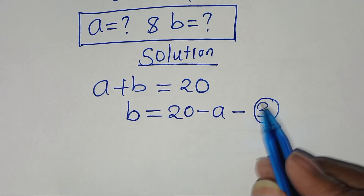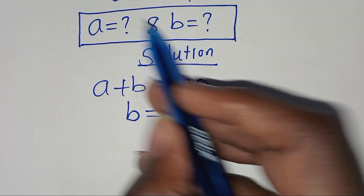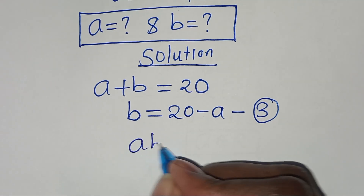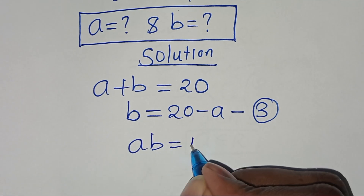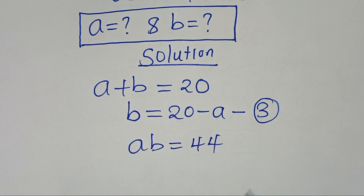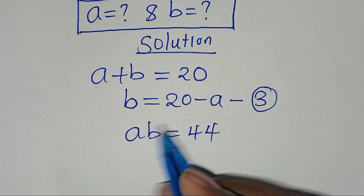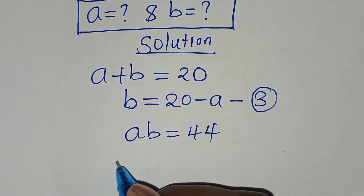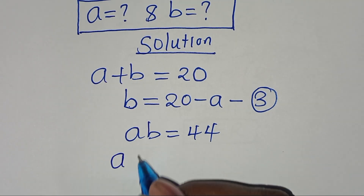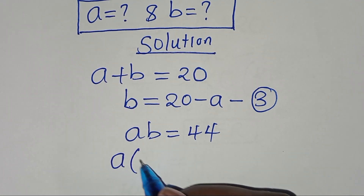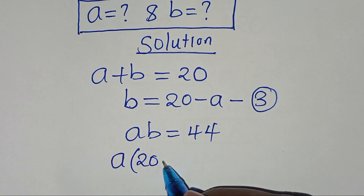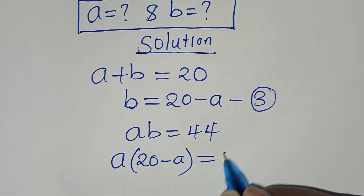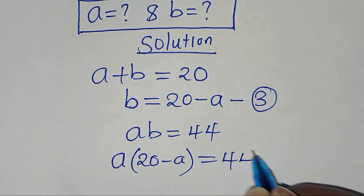From equation 3, let's substitute into equation 2, which is A times B equals 44. Substituting B here, we'll have A times (20 minus A), this is equal to 44.